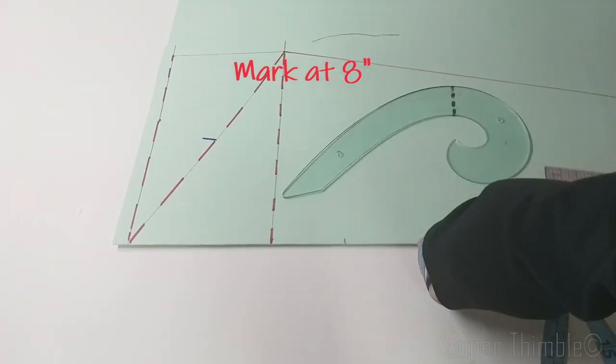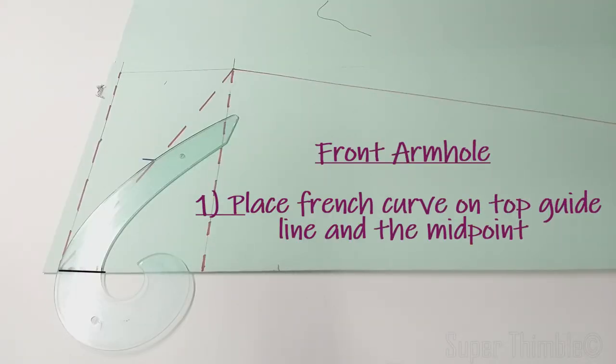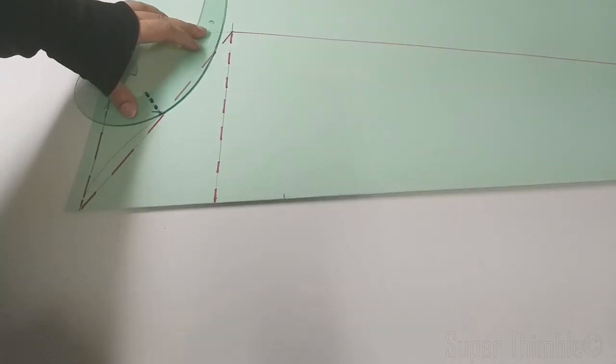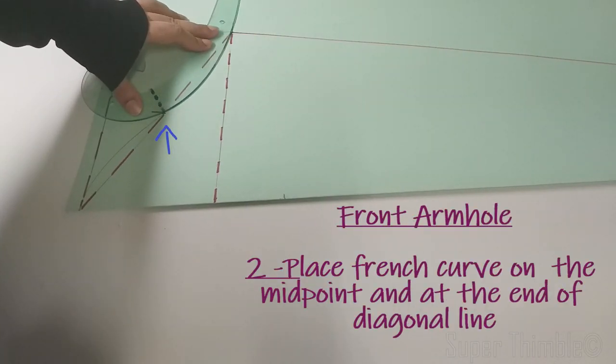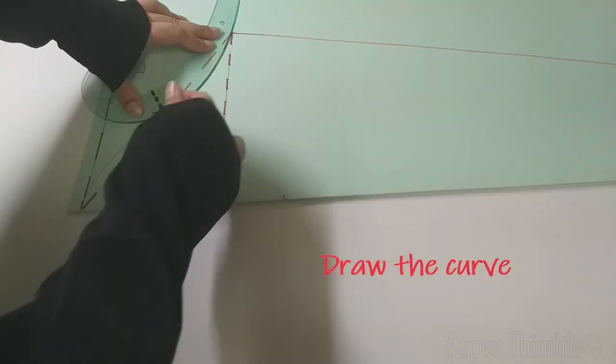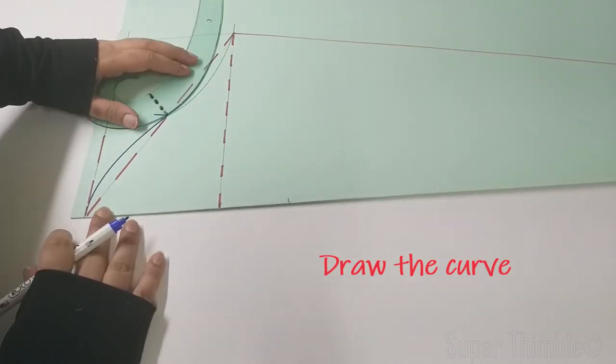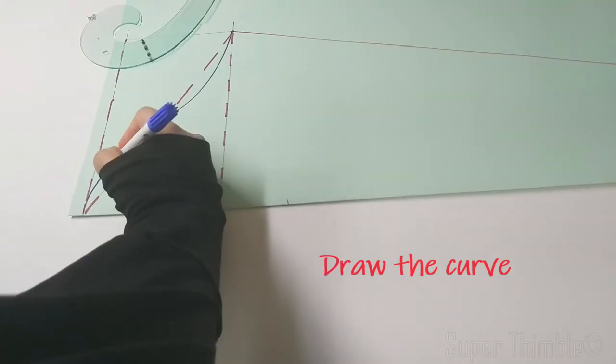For the front armhole, we will do it in 2 steps. Place the French curve mark on the top guideline and match the curve with the midpoint. For the second curve, place the marked point of French curve on the midpoint and on the ending of the diagonal line. Use a marker to make the curve and label it front armhole.